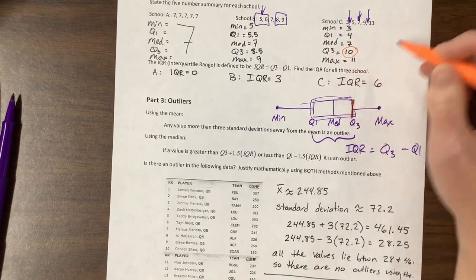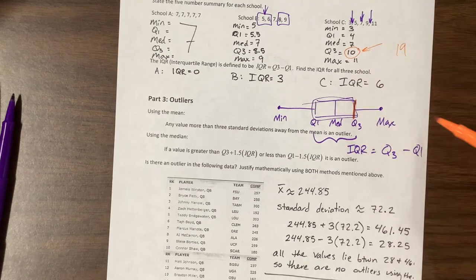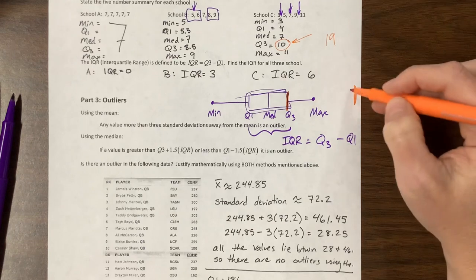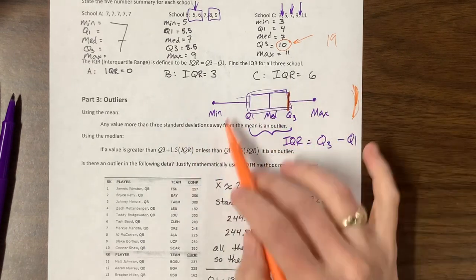So I would add 9 to this value. So if my Q3 here were 10, and I add 9, I'm now at 19. Well my maximum was at 11, so this becomes my boundary for determining if I have outliers. Well everything stayed within that.